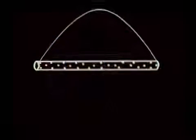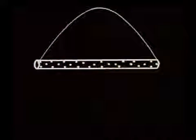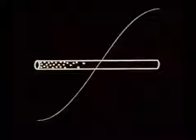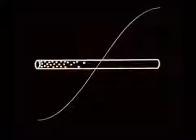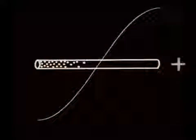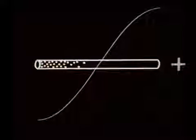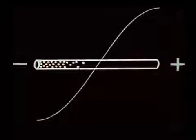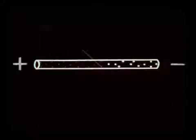This current standing wave is 90 degrees out of phase with the voltage standing wave. At this instant, the antenna has a positive voltage at this end and a negative voltage at this end. When the voltage builds in the opposite direction, the polarity reverses.